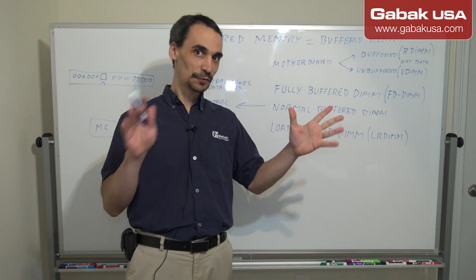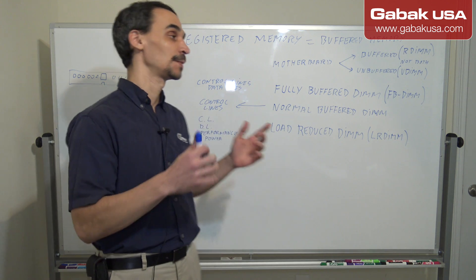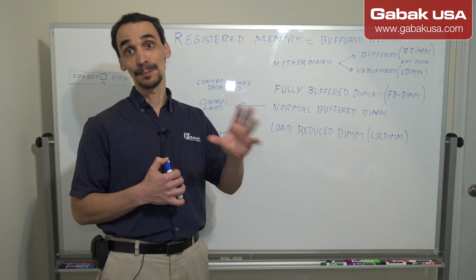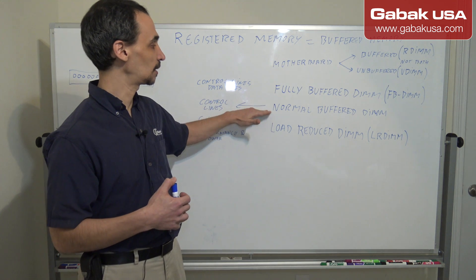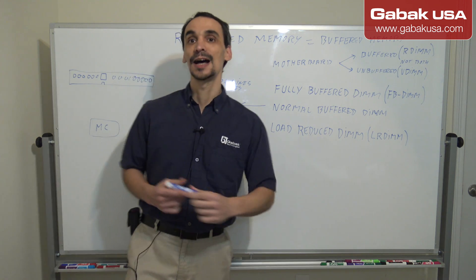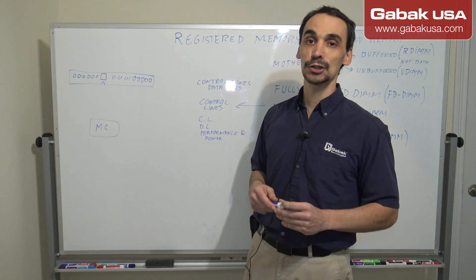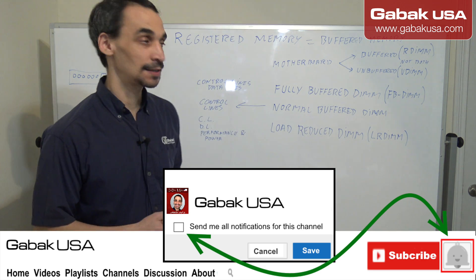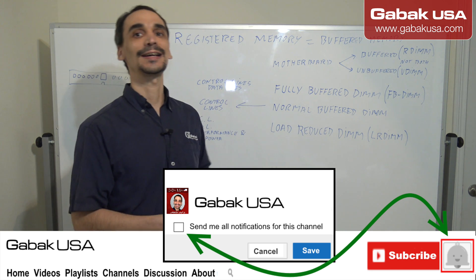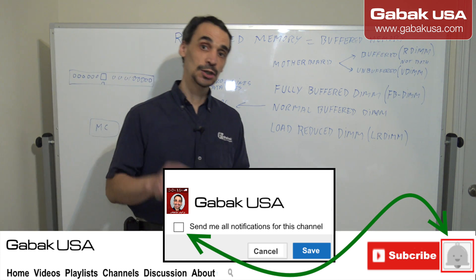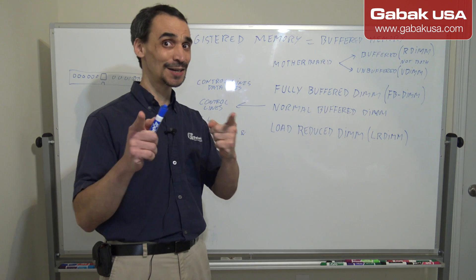To recap: registered RAM and unregistered RAM are two different types and require different motherboard slots. Registered RAM may come with or without ECC. There are three kinds: Fully Buffered DIMM, normal buffered DIMM, and Load Reduced DIMM. Remember that the register chip runs one cycle behind. I hope you enjoyed this class — leave a comment below, subscribe to the channel, click the bell so YouTube notifies you, and see you next class!